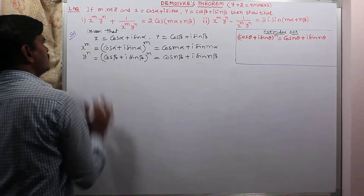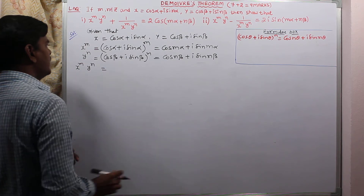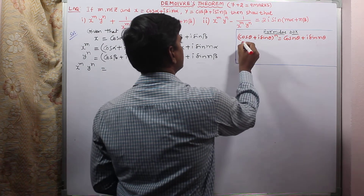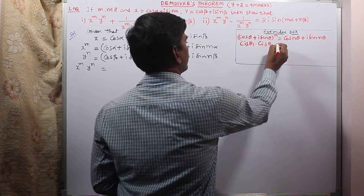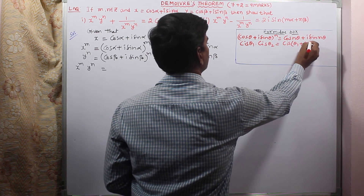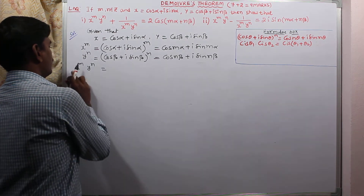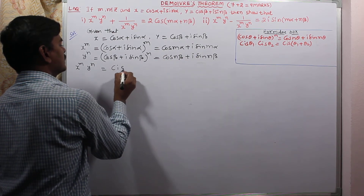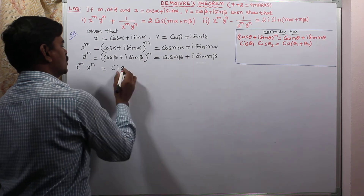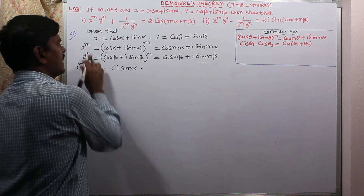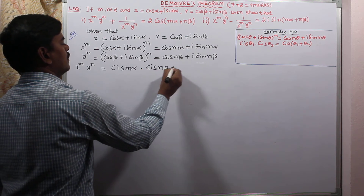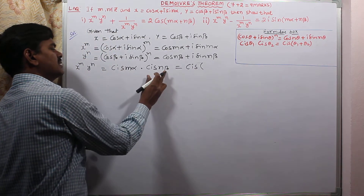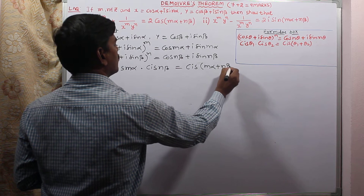After getting x^m and y^n individually, now we find x^m · y^n. We multiply these two complex numbers. Using the cis notation: cis(θ₁) · cis(θ₂) = cis(θ₁ + θ₂). We write x^m as cis(mα) and y^n as cis(nβ). So x^m · y^n = cis(mα) · cis(nβ) = cis(mα + nβ).